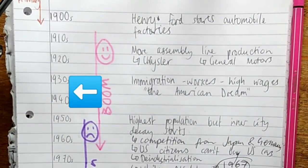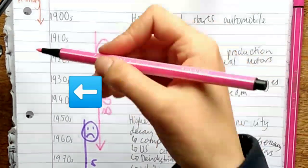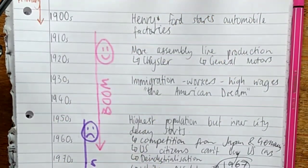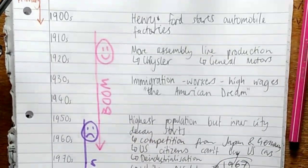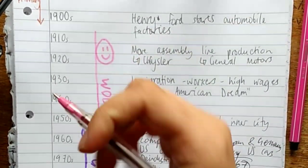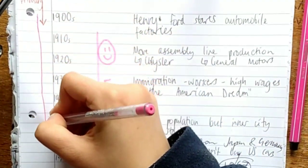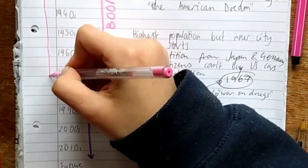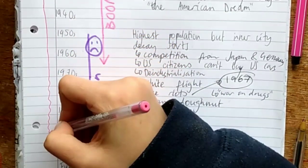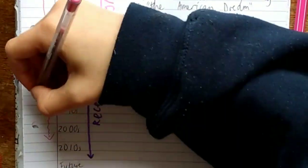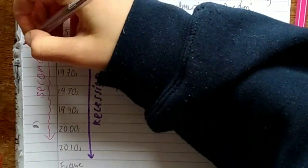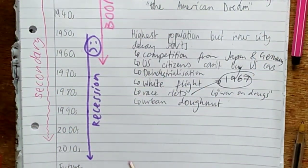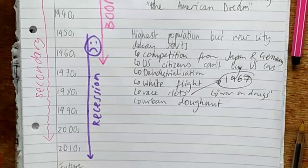In terms of what economic sectors are prevalent in Detroit, we've got primary first there with mining and agriculture. Then when Henry Ford sets up, we've got secondary industry with the car manufacturing industry. You can see that from about the 60s, 70s, it's kind of a wiggly line, declining. Still present these days, but not that good.